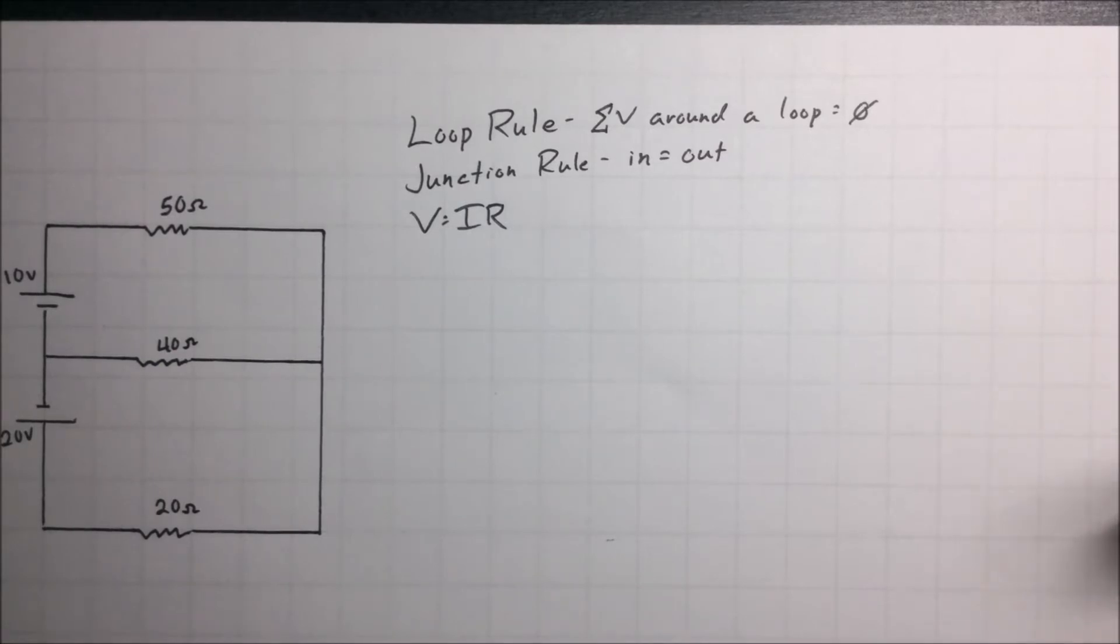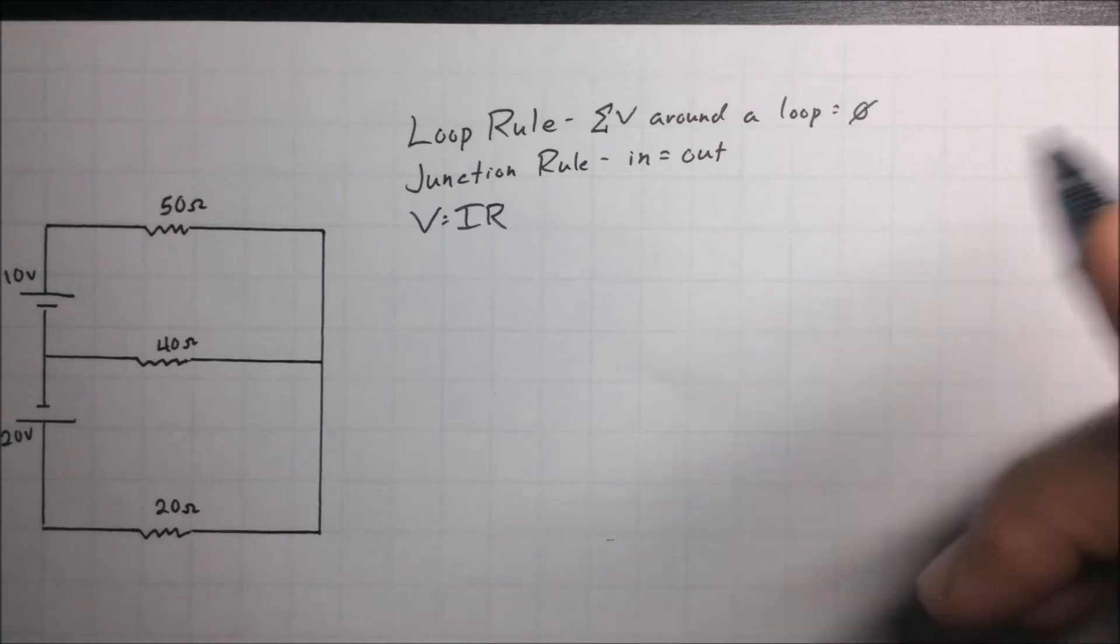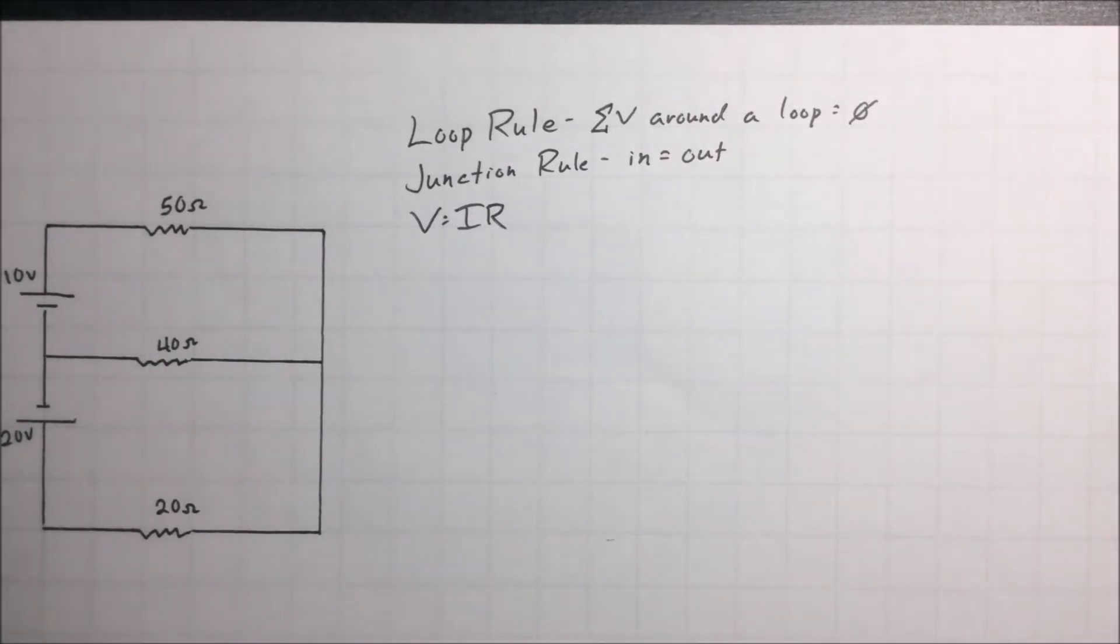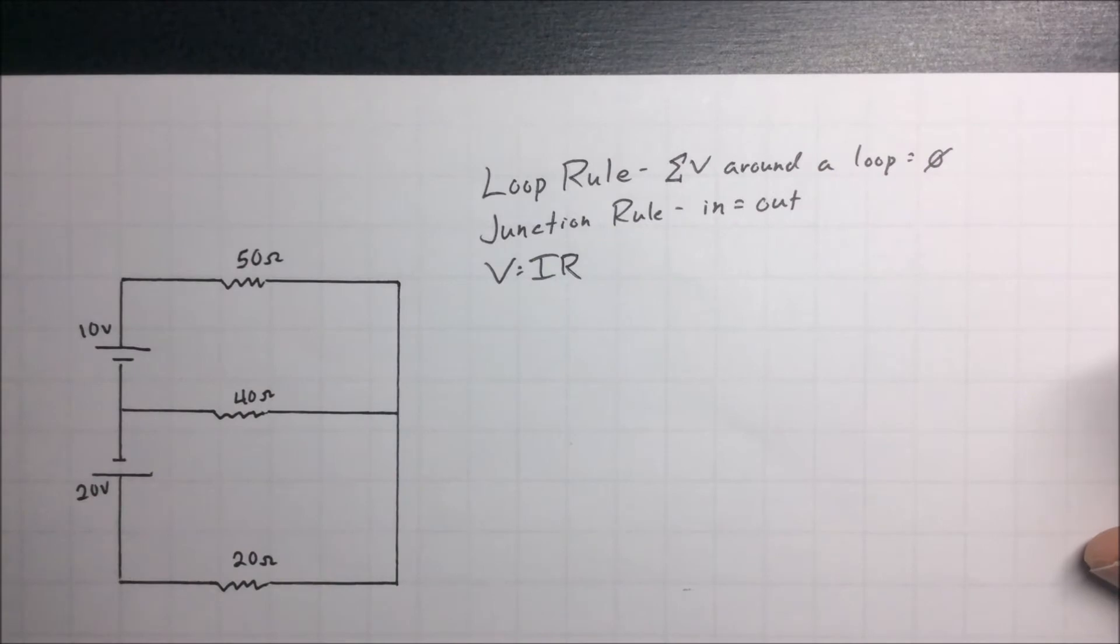We're also going to use Ohm's law. Ohm's law is V equals IR, the voltage is equal to the current times resistance, or the potential difference is how we should really say it, is equal to the current and the resistance that it has to go through.